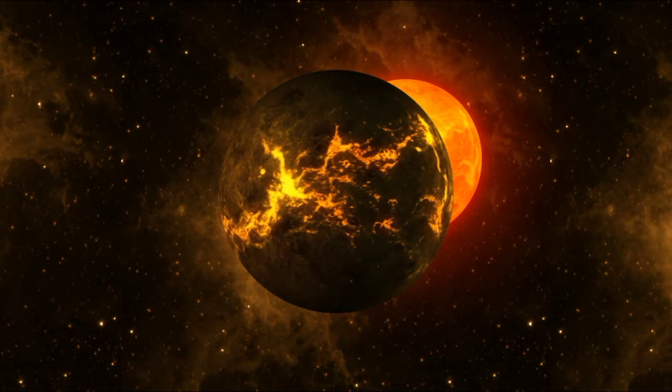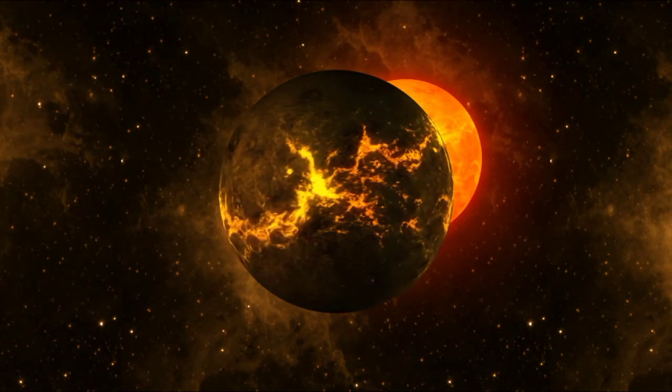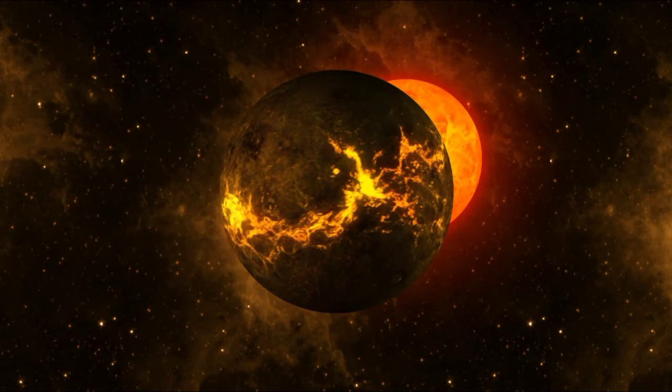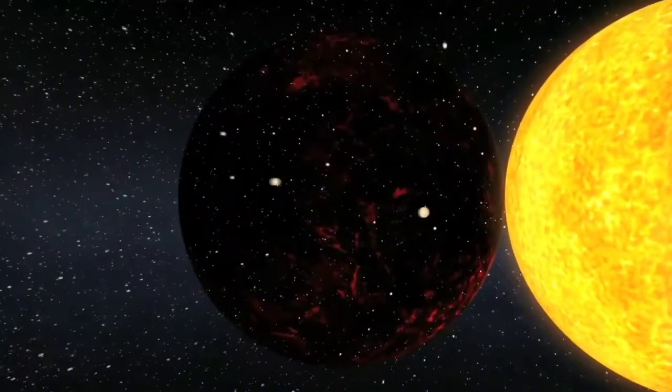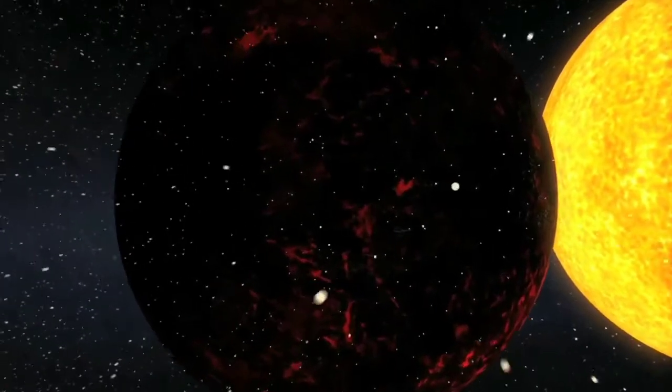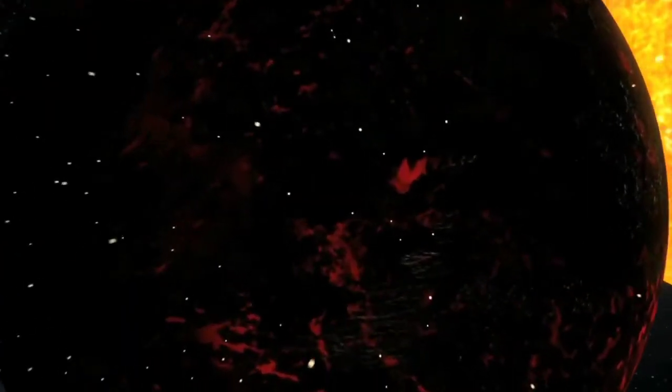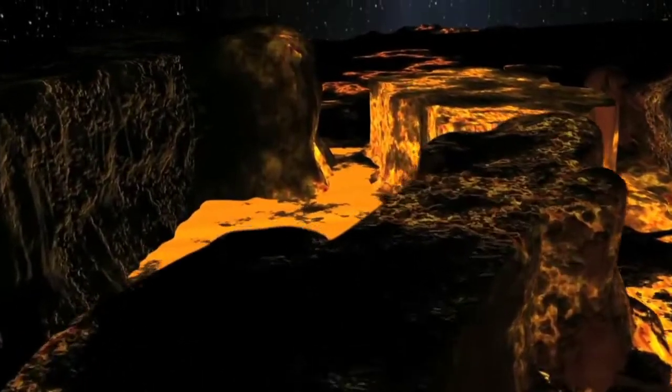Hot Jupiters are gas giants that orbit extraordinarily close to their stars and have extremely high surface temperatures. Ultra-hot Jupiters are even more extreme, with surface temperatures greater than 3,500 Fahrenheit. Astronomers estimate that TOI-2109b's dayside temperature is greater than 5,840 Fahrenheit, as hot as some small stars.